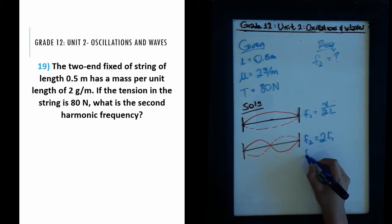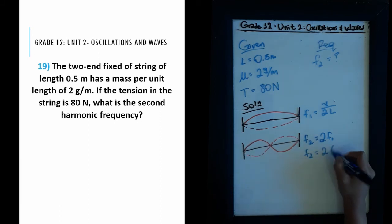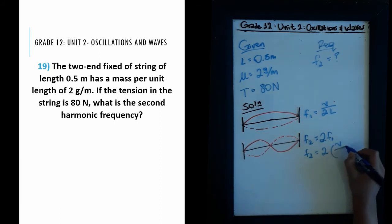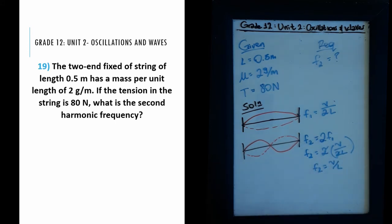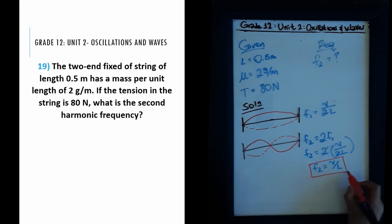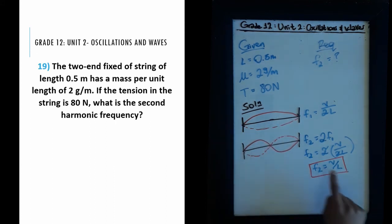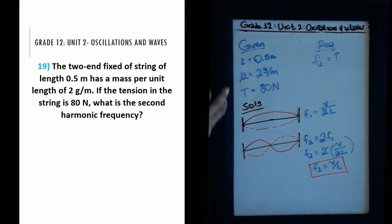Since f₂ = 2 × f₁ = 2 × (v / 2L), the twos cancel, giving us f₂ = v / L. This means the second harmonic frequency equals the wave speed divided by the length of the string.